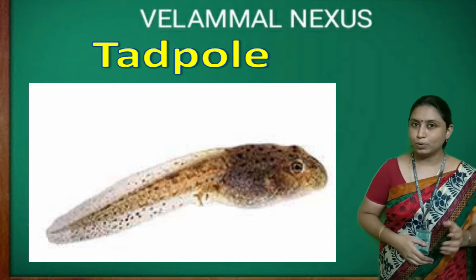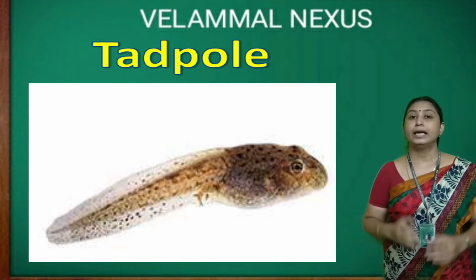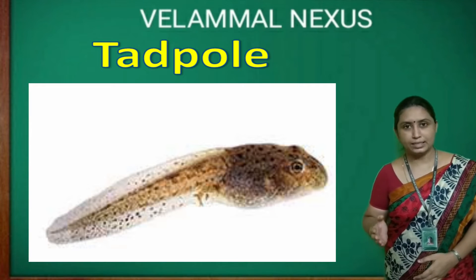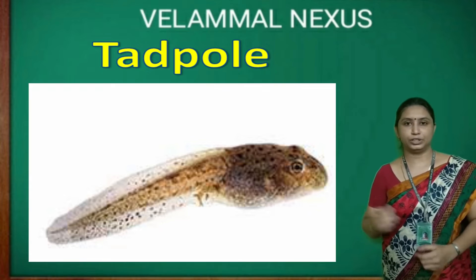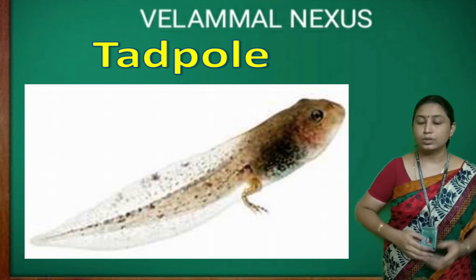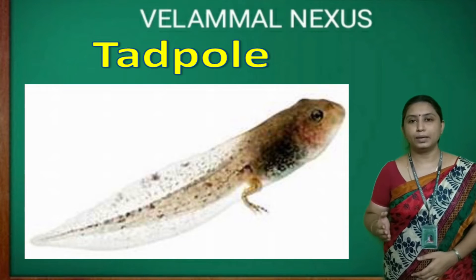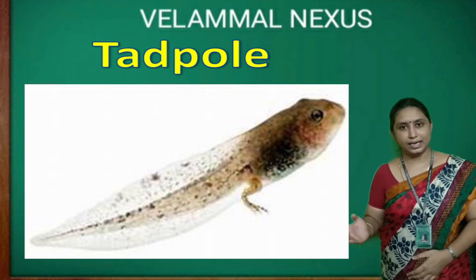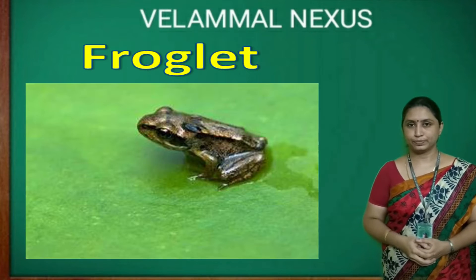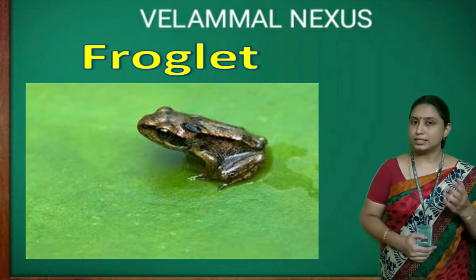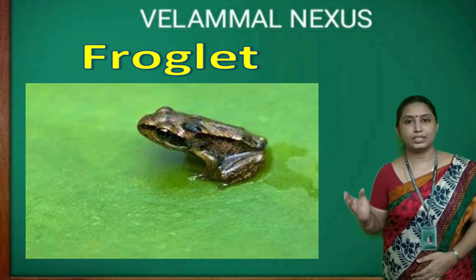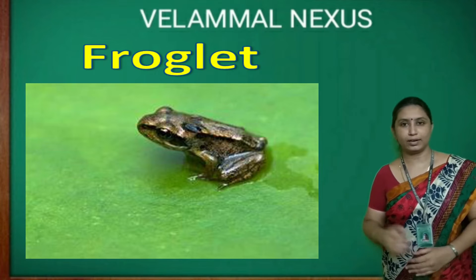A tadpole lives in water. It breathes using gills and moves like a fish. In this stage, the tadpole starts developing its legs and tail as it grows. In the next stage, the tadpole loses its tail and grows into a froglet.